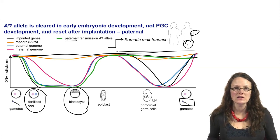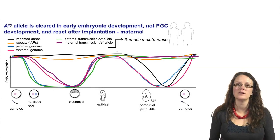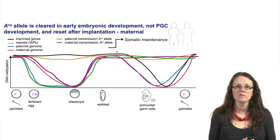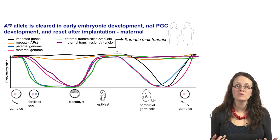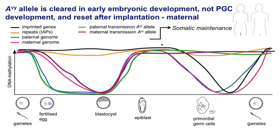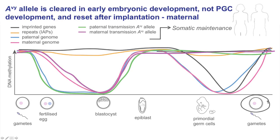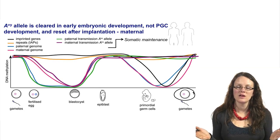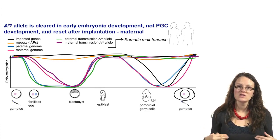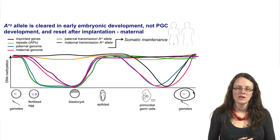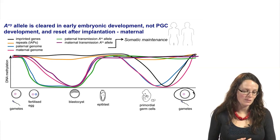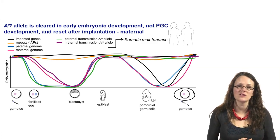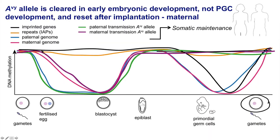Perhaps the more interesting thing to consider is what happens following maternal transmission of the AVY allele. Following maternal transmission, this is when we did see transgenerational epigenetic inheritance — a yellow mother gave rise to more yellow offspring than a pseudo-agouti mother. In this case, we still don't see clearing through oogenesis. Oocytes from a yellow mother or a pseudo-agouti mother still have very different DNA methylation profiles, very similar to the somatic cells of those same females. When you follow methylation through early development, the AVY allele following maternal transmission is demethylated at the same rate as the rest of the genome — passively through early development.